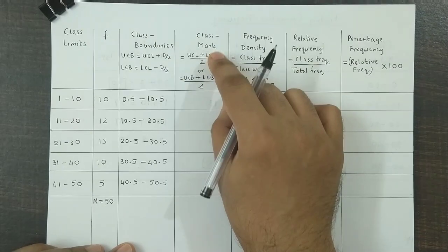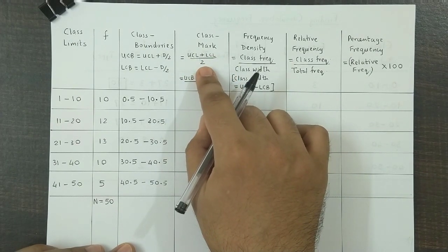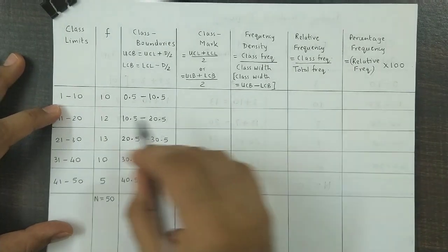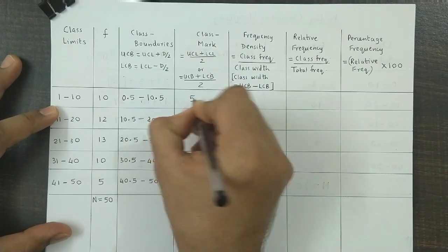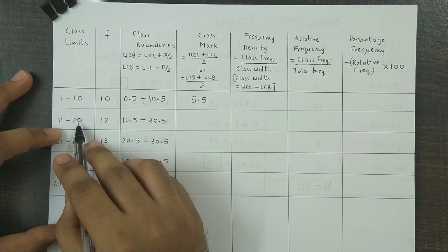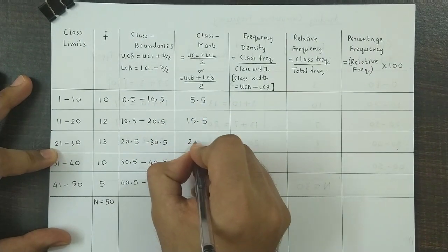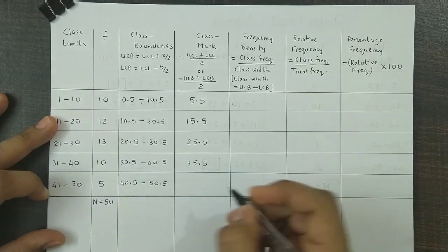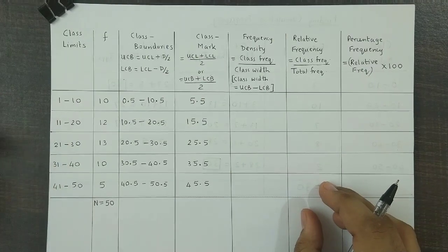Next we calculate the class mark. The class mark, also called the mid value, is calculated as (upper class limit + lower class limit) / 2, or alternatively using boundaries. Using the limits: (1+10)/2 = 5.5; (11+20)/2 = 15.5; (21+30)/2 = 25.5; (31+40)/2 = 35.5; and (41+50)/2 = 45.5.